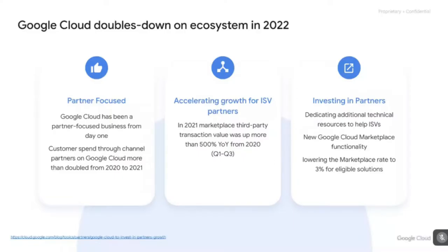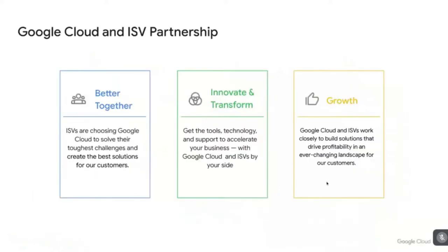Google Cloud has been a partner-focused business from day one. Fast forward to 2021, we faced unprecedented demand from businesses as they turned to the cloud to digitally transform their organizations. This surge in cloud adoption meant we increasingly turned to our ecosystem to help customers procure packaged solutions from our third-party software partners, or ISVs, available through the Google Cloud Marketplace.